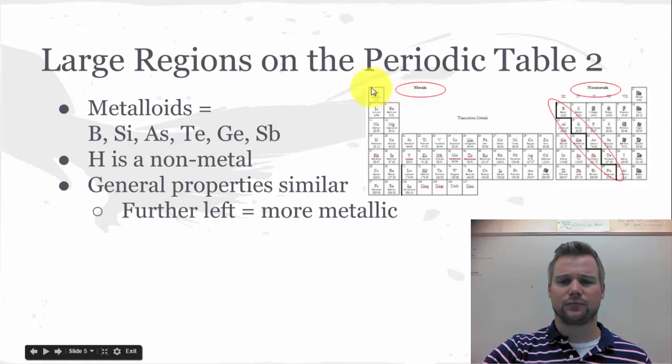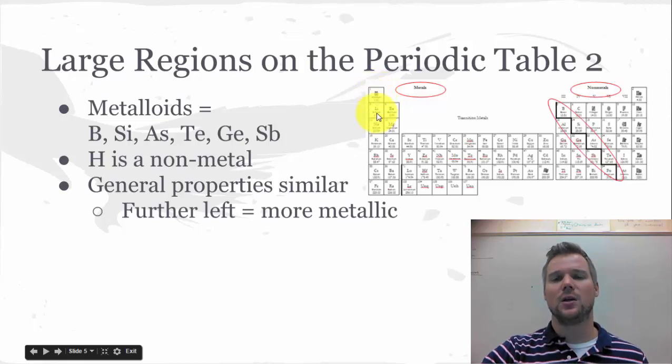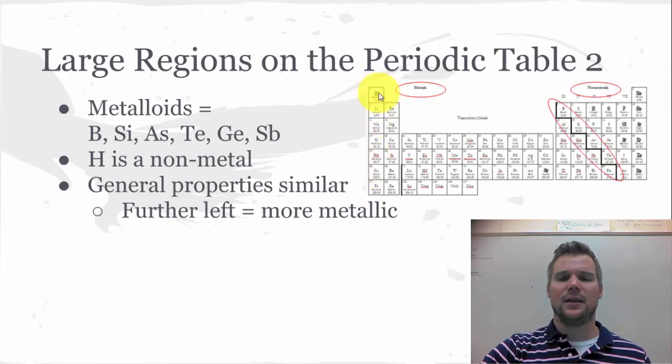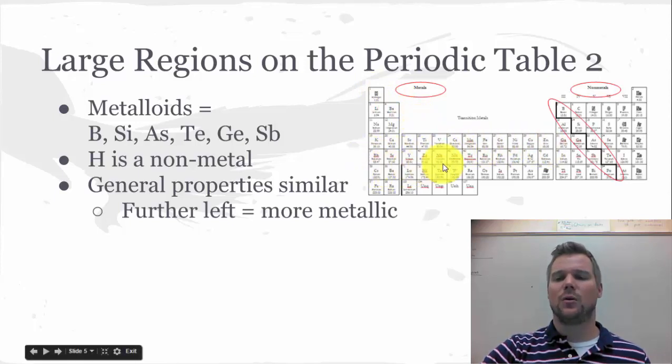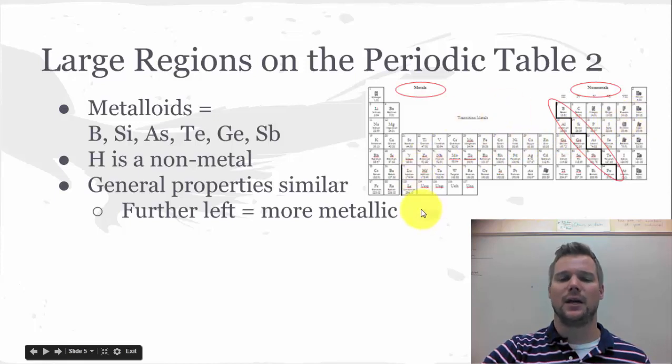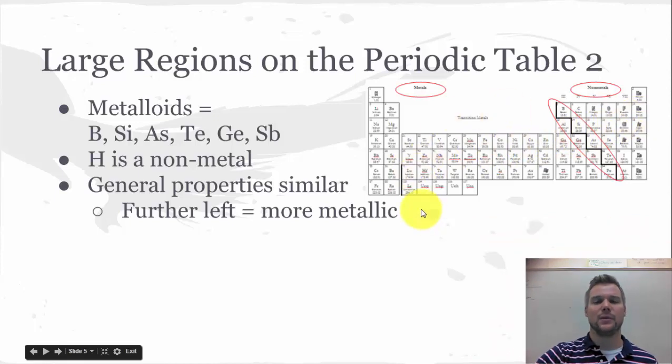It's also important to know, hydrogen is a non-metal. Even though it's on the metal side, it just electronically belongs over with the metals, even though it's not a metal itself. And then in general, as you go further left, the atoms become more metallic. The more right you go, the atoms become more non-metallic. We're going to learn a little bit more what that means.